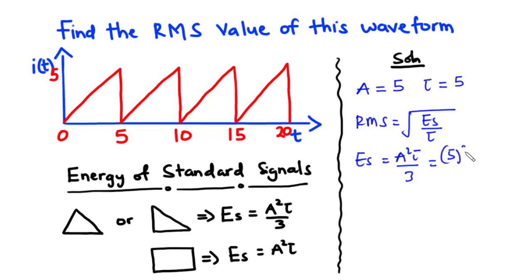So we have 5 squared times 5 divided by 3. So ES is equal to 125 divided by 3. Now since tau is equal to 5,